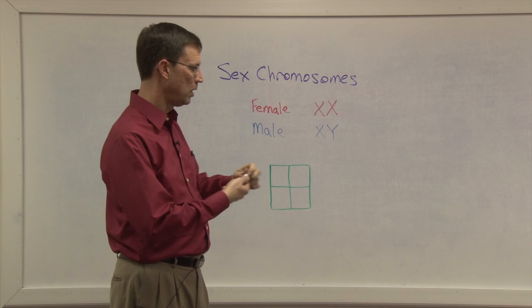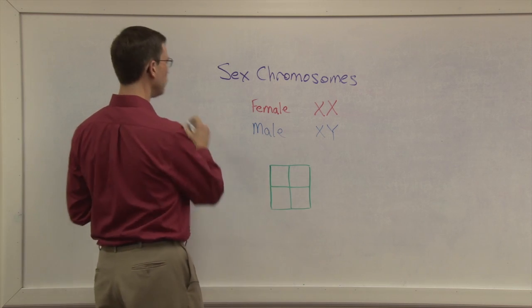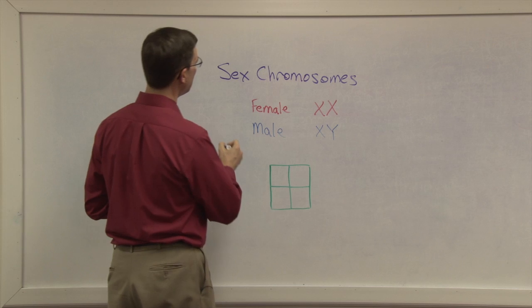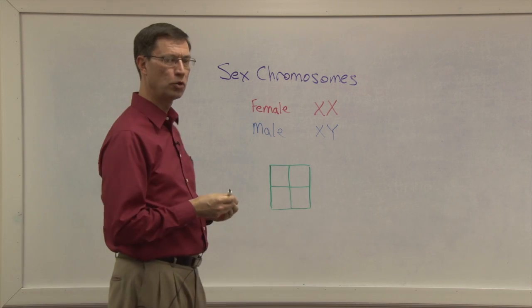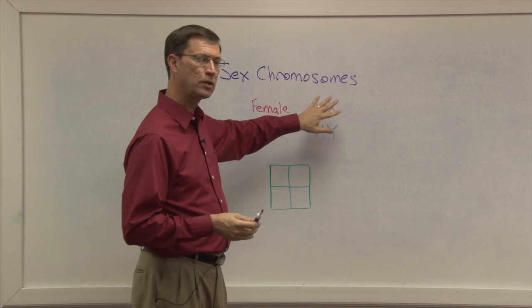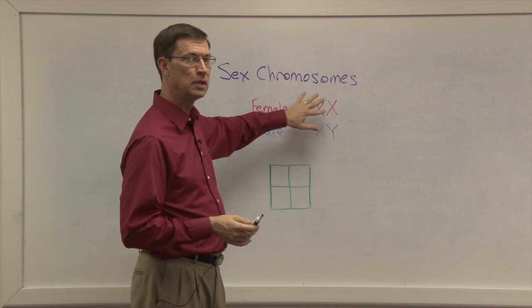There's a chromosome, one of the chromosomes of the 46 chromosomes, the 23 pairs, is an X chromosome. If both chromosomes are X chromosomes, then the offspring is going to be a girl.